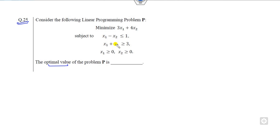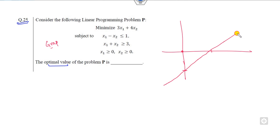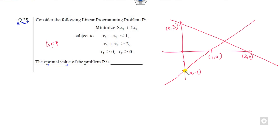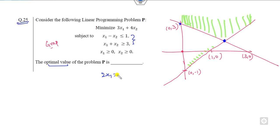Now look at question 65 — this is solved with the graphical method. Draw the graph: for the first constraint, when x1 = 0, x2 = −1, and when x2 = 0, x1 = 1, giving points (1, 0) and (0, −1). For the second constraint, when x1 = 0, x2 = 3, and when x2 = 0, x1 = 3, giving points (3, 0) and (0, 3). The feasible region is identified, and the corner points are (0, 3) and (2, 1), found by adding the two equations: 2x1 = 4, so x1 = 2, x2 = 1.